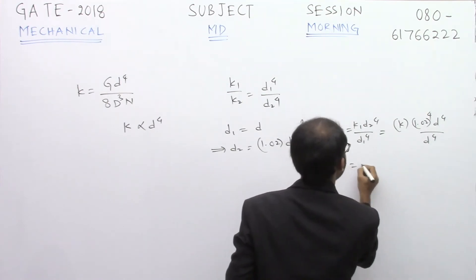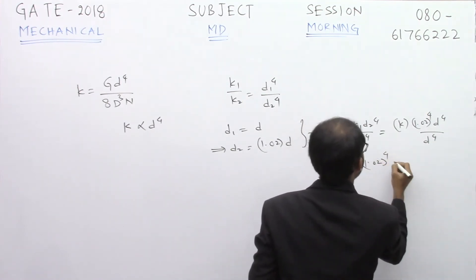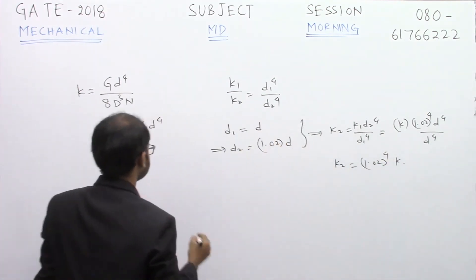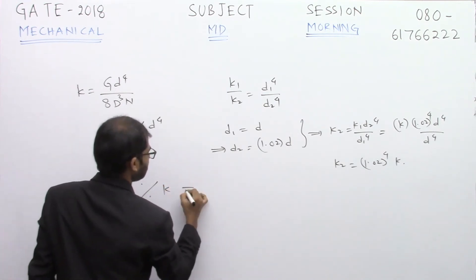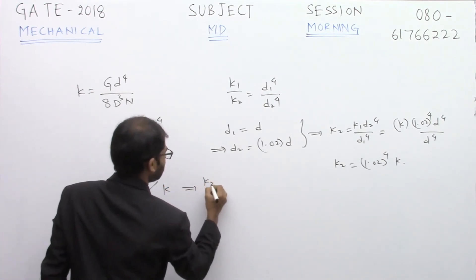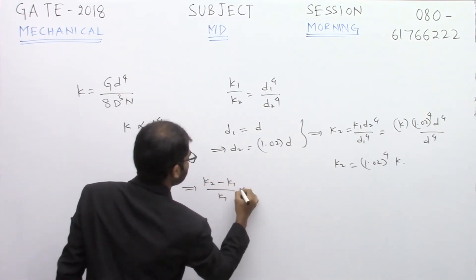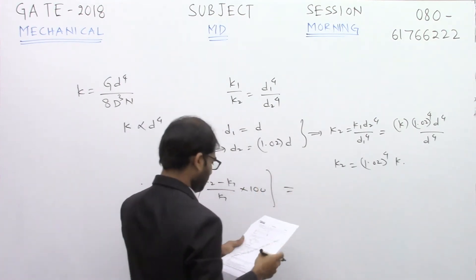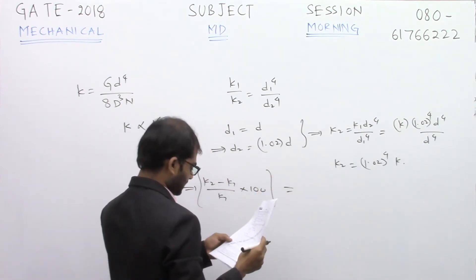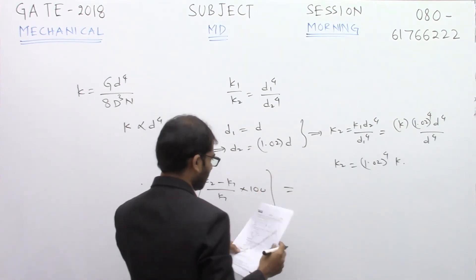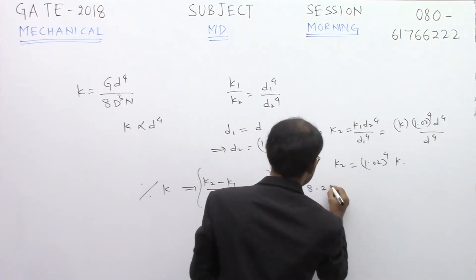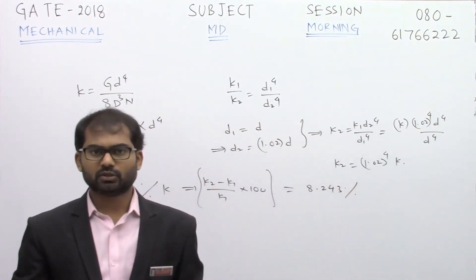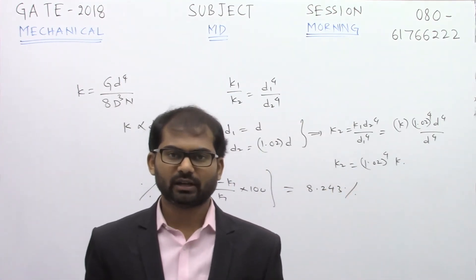So k2 = (1.02)⁴ × k. The percentage change in k is then (k2 − k1) / k1 × 100. Doing this calculation gives the final answer as 8.243 percent.